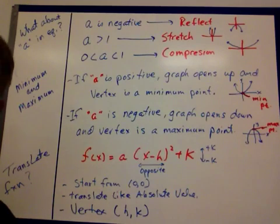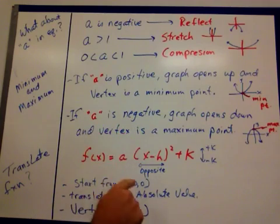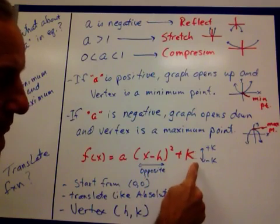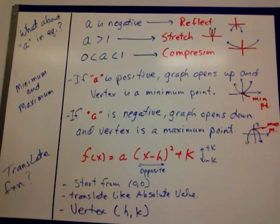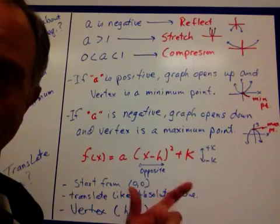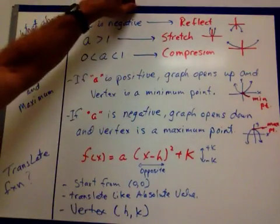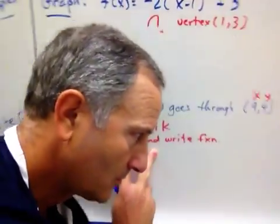Translating the function exactly like absolute value. This tells you up, down, steepness, go opposite right or left from the origin, and then up or down. If it's positive, you go up. If it's negative, you go down. So you start from the origin, you translate like absolute value, and your vertex is h, k. So if that was x minus 2, it'd be positive 2 for your h.